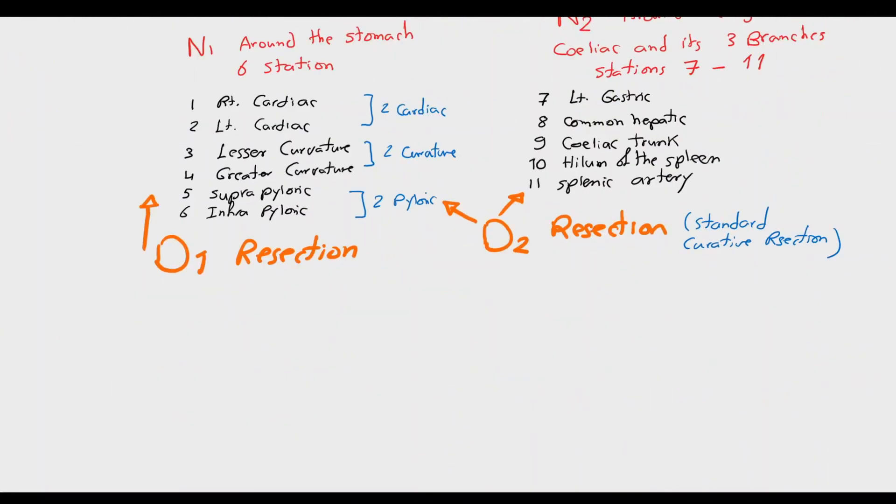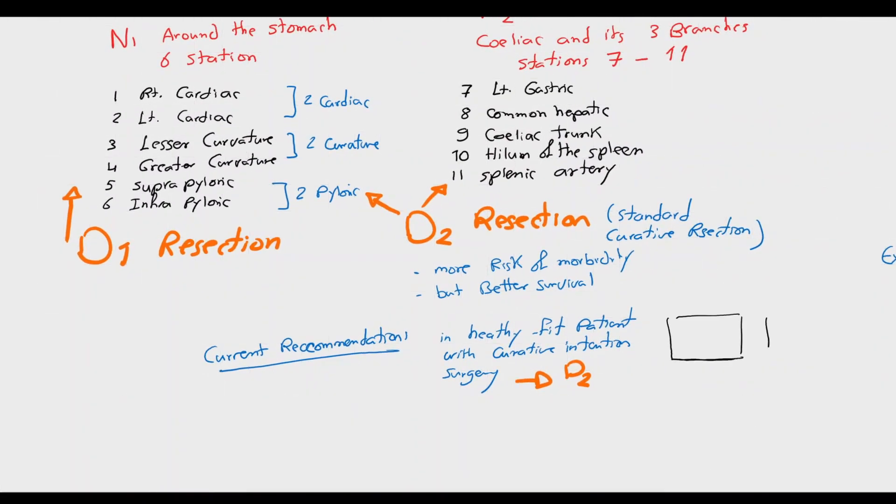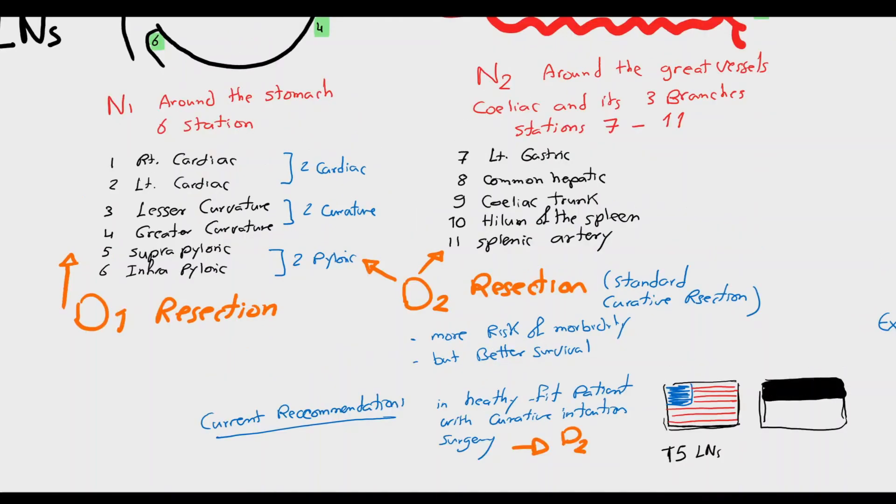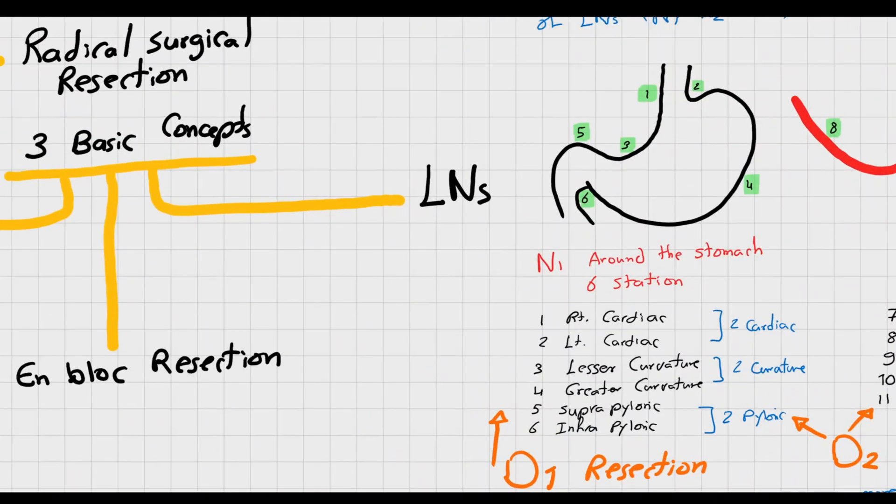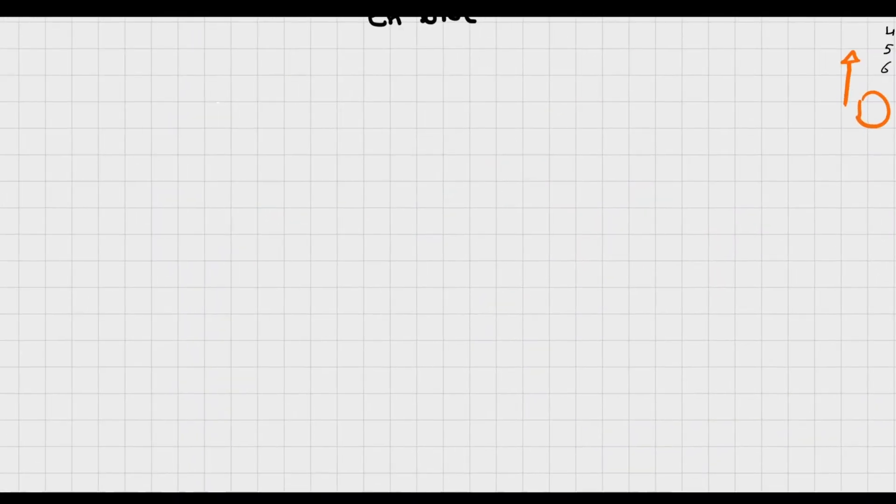In Western countries, D2 resection is the standard curative resection. It carries more risk of morbidity but carries better survival chance and less recurrence rate. Current American guidelines recommend resection of a minimum of 15 lymph nodes, and German guidelines suggest a minimum of 25 lymph nodes from the first two tiers, N1 and N2.